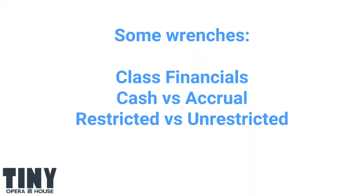We talked about some complications in financial reporting. We talked about class financials — the big buckets that the IRS likes us to think about our activities in — which are fundraising, management, and program expenses. We talked about the difference between cash and accrual accounting and how they can provide different numbers. They're basically different philosophies of how you report money coming in and money going out of the organization.